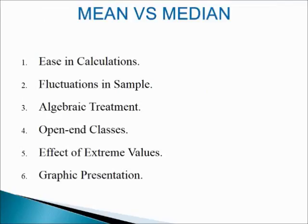Next, we come to mean vs. median. The first point regarding it is in calculations: median is easier to calculate as compared to mean. Second point, fluctuations in sample: the general fluctuations of sampling affect the median to a greater extent than the mean.